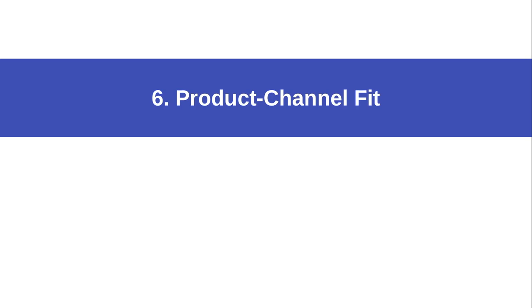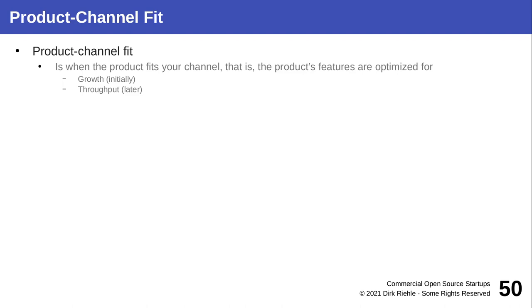Proceeding then means moving on to the last stage of product-channel fit. That's when your product really fits the channel — your product is customizable or exists in variants where the features available to customers match the channel by which you reach the customer. That will give you the desired growth, possibly even hyper-growth and later consistent throughput.